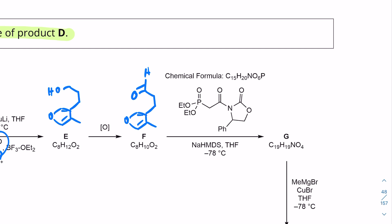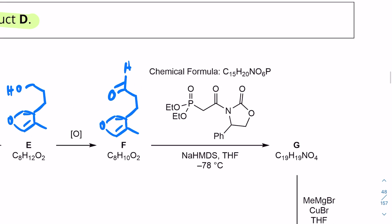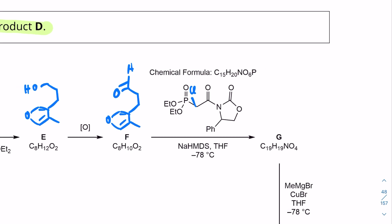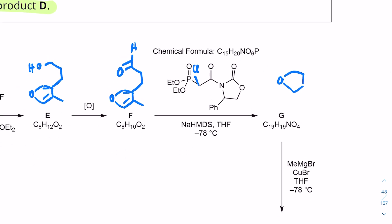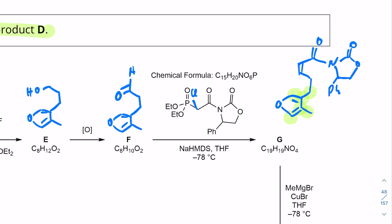Checking the molecular formula for compound G: 19 carbons, 19 hydrogens, 4 oxygens, and 1 nitrogen — correct. Now for the next step, methyl magnesium bromide with copper(I) bromide is a conjugate addition of a methyl group to the alpha-beta unsaturated ketone. So we see an extra methyl group added and the double bond is gone. That gives us compound H after the conjugate addition.